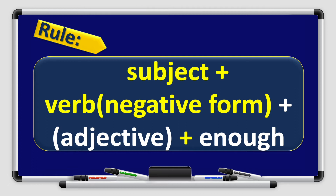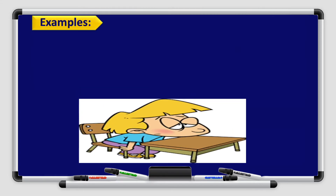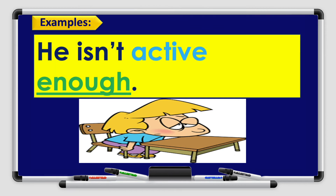Let's see our rule for today: subject plus verb in negative form plus adjective plus 'enough.' Remember boys and girls — the negative form. Our rule is: subject plus verb in negative form plus adjective plus 'enough.' Example: He isn't active enough. Take a look at this picture — he is too lazy and too sleepy. He isn't active enough.